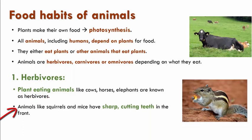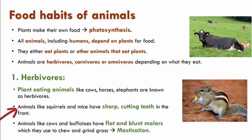Animals like squirrels and mice have sharp cutting teeth in the front, which they use to eat seeds and nuts. Animals like cows and buffaloes have flat and blunt molars which they use to chew and grind grass. This is called mastication.